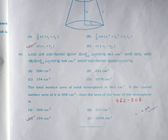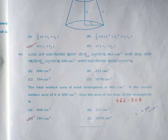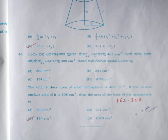Question number 40: the correct answer is option C, 154 square centimeter. Just subtract 462 minus 308 to get 154 square centimeter. Students, if any answers are incorrect, not to worry — you still have three language subjects where you can score maximum marks. Mistakes are the stepping stones to success, so proceed and start studying for the next subjects.